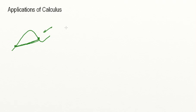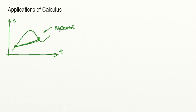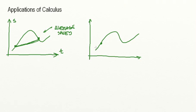Now, following up from displacement, if we take two times — two different times — and we calculate a gradient on what would be a displacement-time graph, that gradient would give us an average value. If the graph you're discussing is a displacement-time graph, then the gradient would be an average speed. Now, if you pick a point and get your derivative at that point — so that's a tangent line — this will give us an instantaneous speed.